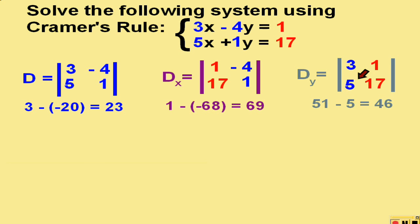Now that we have the three values, to determine x, we simply put the value of D sub x over D, which would be sixty-nine over twenty-three, or simply three.